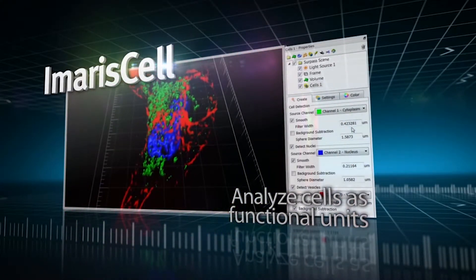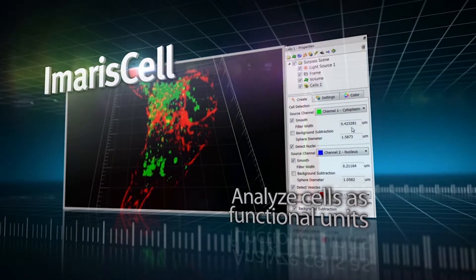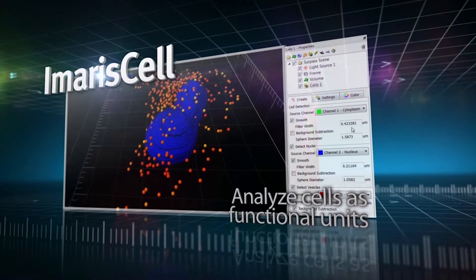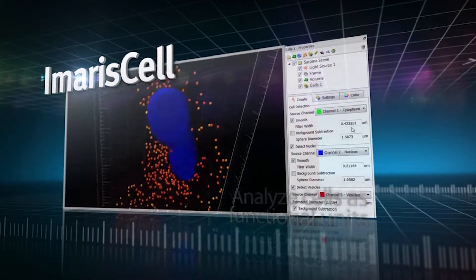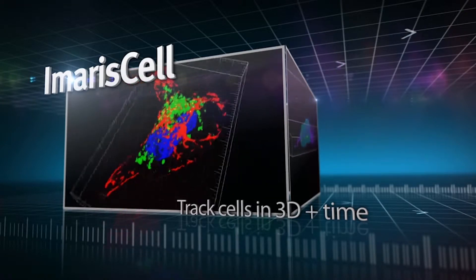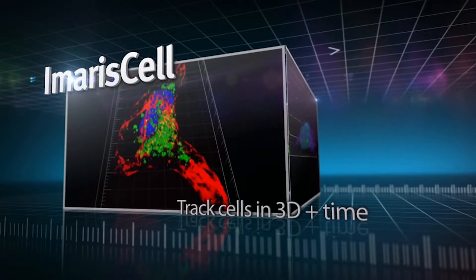Imaris Cell makes it possible by applying biologists' concept of cells to visualize intricate relationships between compartments, as well as relations within cell groups. With Imaris Cell, you can easily segment and analyze your 3 and 4 dimensional cell images.